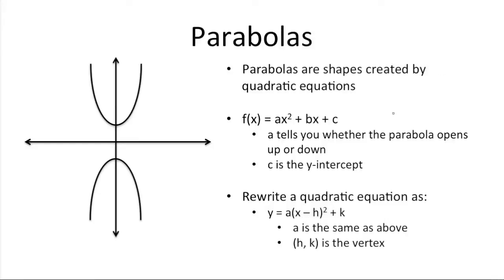You can also rewrite a quadratic equation in the form y is equal to a times x minus h squared plus k. When the quadratic equation that you're dealing with is rewritten in this form, the a value is still telling you the same thing, whether the parabola opens up or down based on whether it's positive or negative. However, the h, k here will give you the vertex point. The vertex point can be the lowest point on a parabola, in this case here, or the highest point of a parabola, in this case here. The vertex can kind of be thought of as a midpoint for the parabola.